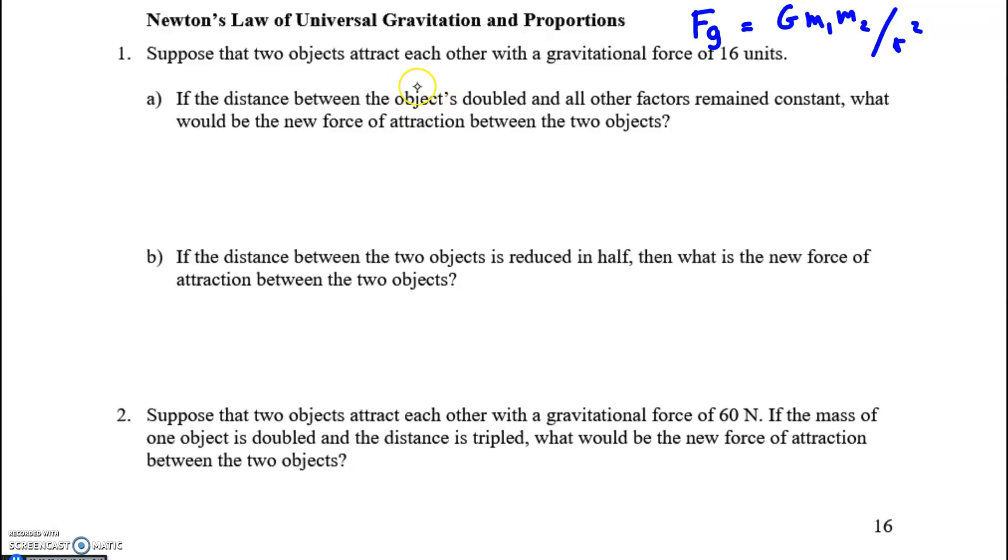Suppose two objects attract each other with a gravitational force of 16 units, probably the unit is Newtons, but maybe it's pounds or something else. If the distance between the objects is doubled and all other factors remain constant, so mass one is staying constant, mass two is constant, G is always constant, what would be the new force of attraction between the objects?